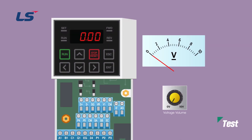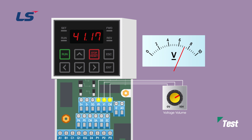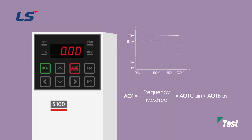Next, we will conduct the test under the parameter conditions set previously. After wiring the variable resistor to VR, V1, and CM terminals to use the internal power supply, rotate the variable resistor and check that the target frequency changes. Below 2 volts, the frequency command becomes 0 Hz. Above 9.5 volts, the frequency command becomes 60 Hz. For analog output, since bias was set to 20% and gain to 80%, a graph is drawn as shown on the screen depending on the output frequency. We learned about how to control the analog input and output of the S100.